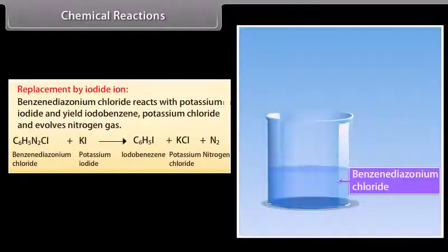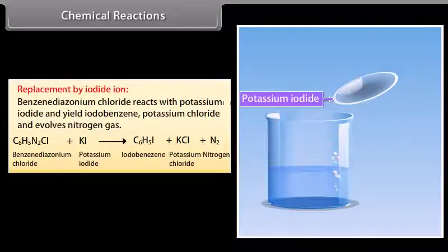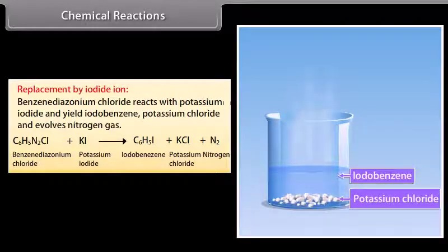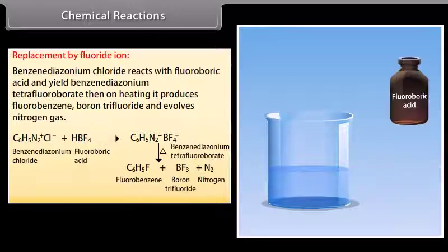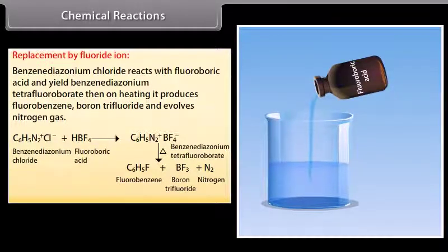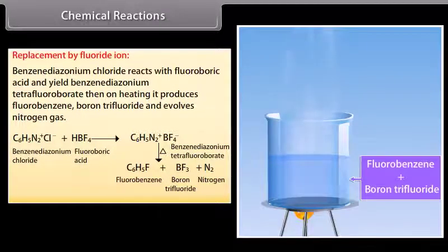Replacement by iodide ion: Benzene diazonium chloride reacts with potassium iodide to yield iodobenzene, potassium chloride, and nitrogen gas. Replacement by fluoride ion: Benzene diazonium chloride reacts with fluoroboric acid to yield benzene diazonium tetrafluoroborate, which on heating produces fluorobenzene, boron trifluoride, and nitrogen gas.